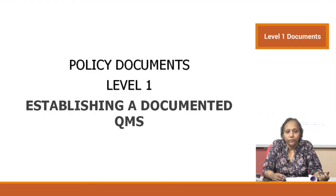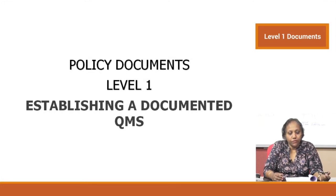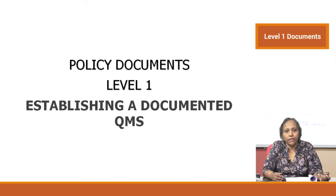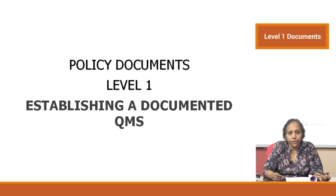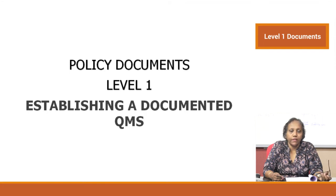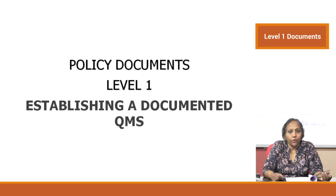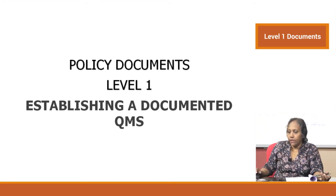Hello again. In the last video, we saw the document hierarchy and divided it into three levels: level 1 — the policy documents for establishing a QMS; level 2 for implementing; and level 3 for maintaining. In this video, we will look at the level 1 documents for establishing a documented QMS.